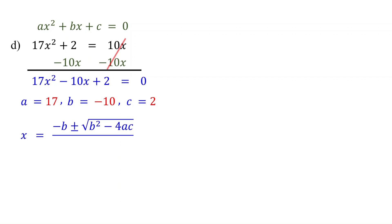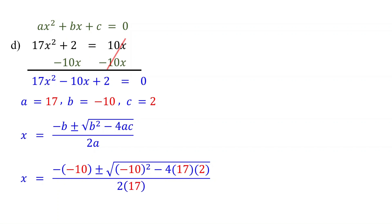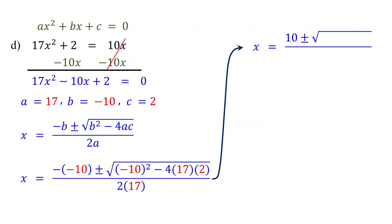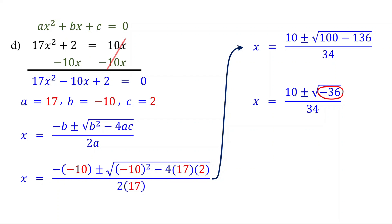Then, write down the quadratic formula and substitute the values of the coefficients into the formula. Now, simplify this. In the numerator, the negative of negative 10 is positive 10. Negative 10 squared is 100. 4 times 17 is 68, and 68 times 2 is 136. In the denominator, 2 times 17 is 34. 100 minus 136 is negative 36. Notice that the number inside the square root is negative. If you are in Algebra 1, working within the real number system, we cannot take the square root of a negative number, so the answer is there are no real solutions.